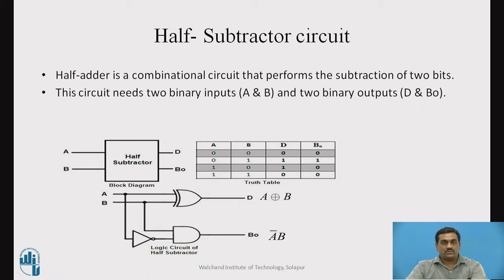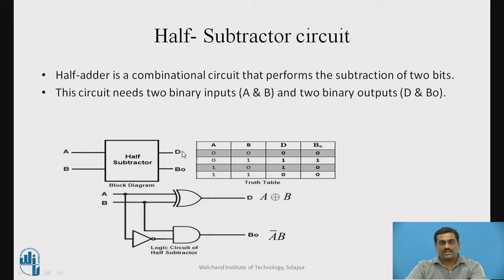The first circuit we are going to implement is the half subtractor circuit. A half subtractor is a combinational circuit that performs subtraction of two bits. It needs two binary inputs and two binary outputs. This is the block diagram: inputs are A and B, and the outputs are D (the difference bit) and BO (the borrow output bit). From the truth table, one can find the logical expressions for D as well as for BO.